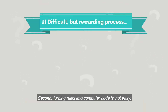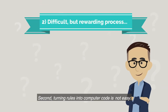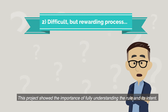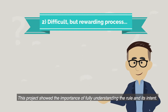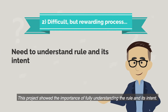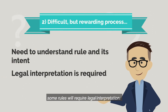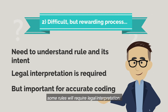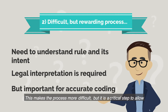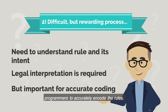Second, turning rules into computer code is not easy. This project showed the importance of fully understanding the rule and its intent. While clear and unambiguous language is ideal, some rules will require legal interpretation. This makes the process more difficult, but it is a critical step to allow programmers to accurately encode the rules.